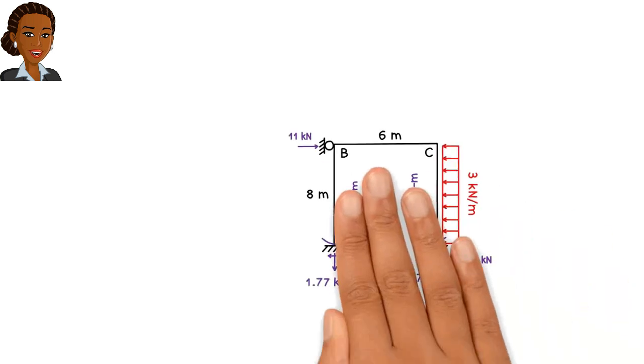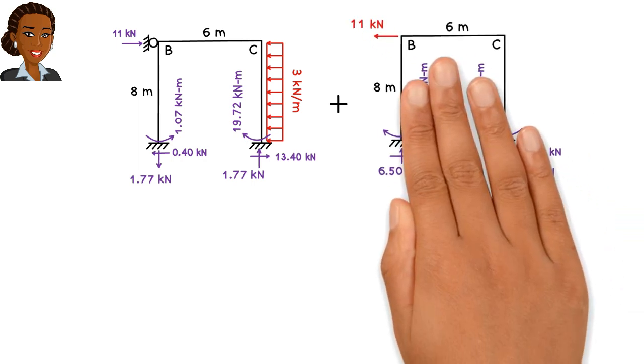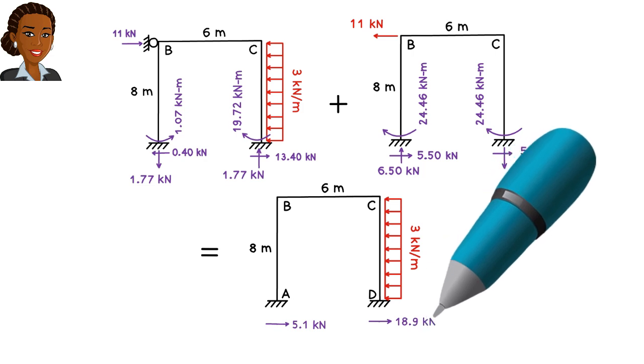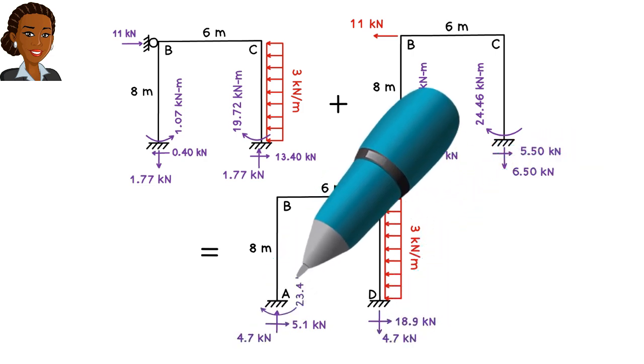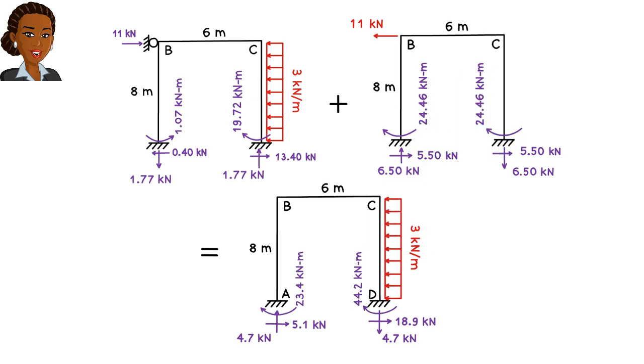According to the principle of superposition, the support reactions for the original frame can be obtained by adding the corresponding support reactions in frames 1 and 2. So we can write the following.